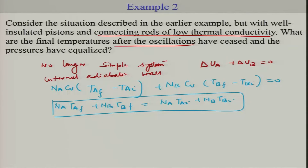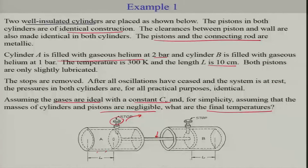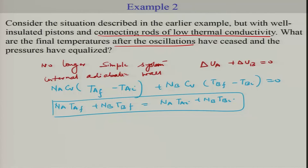Assuming no friction in compartment A and that the process is slow and quasi-static, we have an insulated and adiabatic system. In that case, dU equals delta W — there is no heat transfer. So we can write dU_A equals minus P_A dV_A.